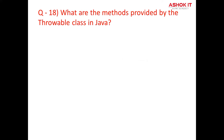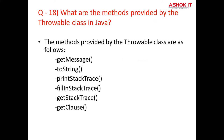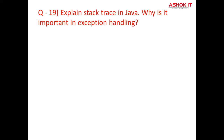Question number eighteen: What are the methods provided by the Throwable class in Java? These are the methods provided by the Throwable class: getMessage(), toString(), printStackTrace(), fillInStackTrace(), getStackTrace(), and getCause(). These are the different methods available.